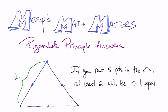I'm going to start with the last question I asked, which is, if you put five points in an equilateral triangle that has side two, at least two of the points will be less than or equal to distance one apart. Knowing that this is a pigeonhole principle problem, first you need to figure out what are the pigeons and where are the pigeonholes.